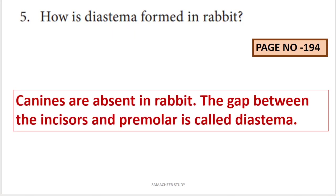Next question: how is diastema formed in rabbit? Canines are absent in rabbit. In most mammals canines are present, but in rabbit they are absent. So there is a gap between the incisors and the premolar, and this gap is called diastema. Refer to page number 194.